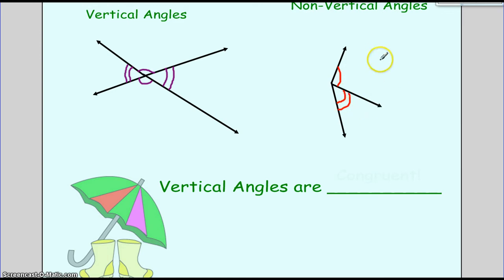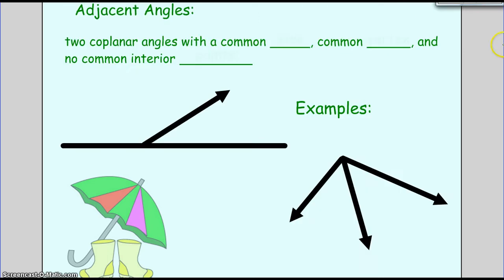Two coplanar angles with a common side, a common vertex, and no common interior points is adjacent. So I like to think of adjacent angles as next to and touching.